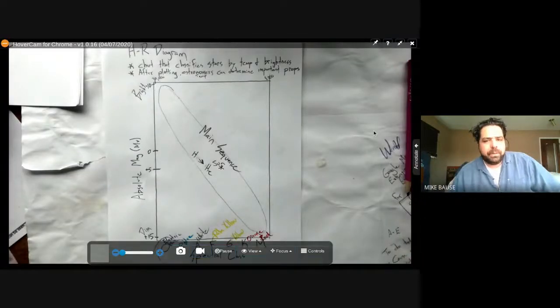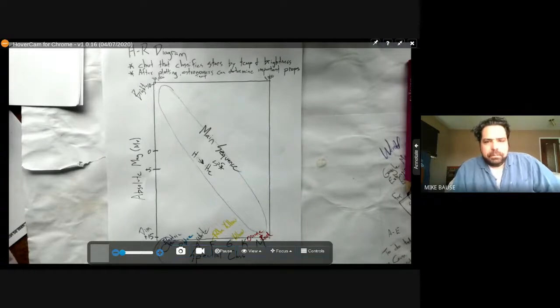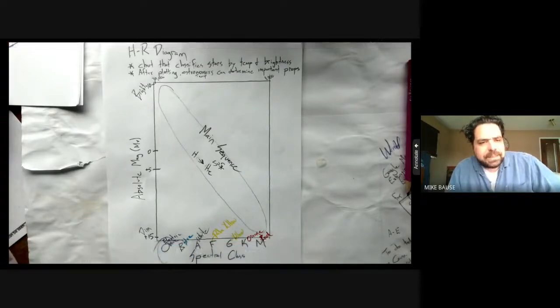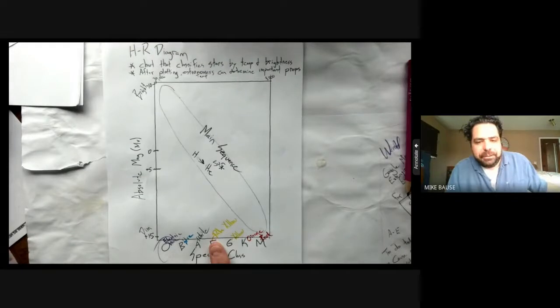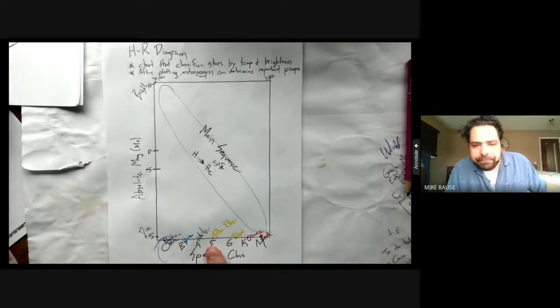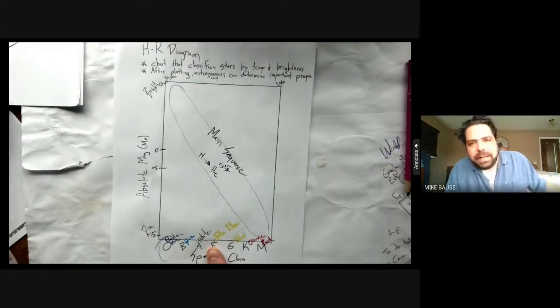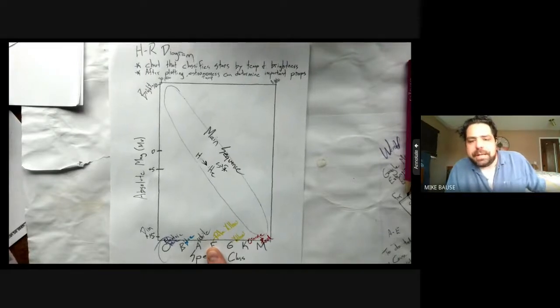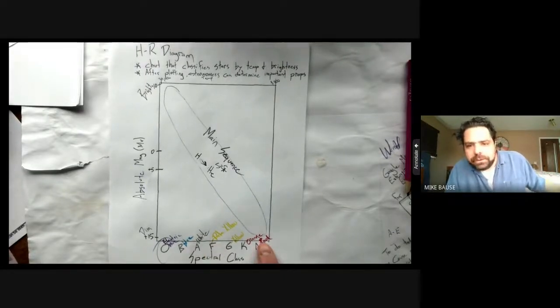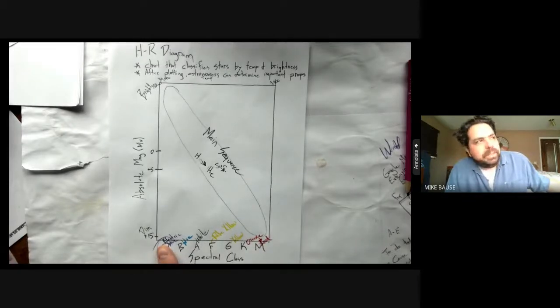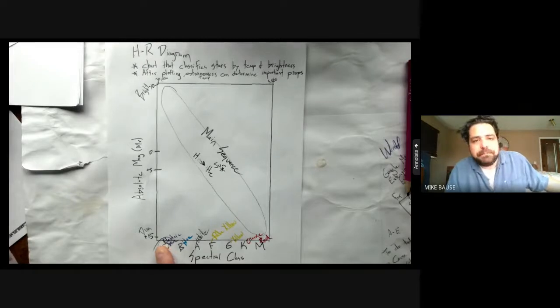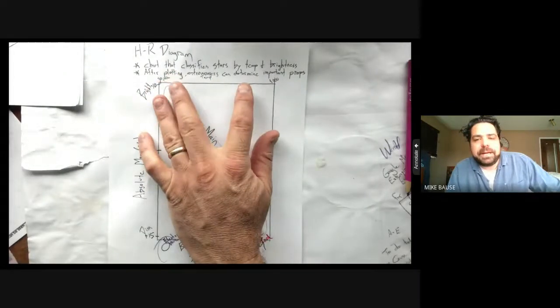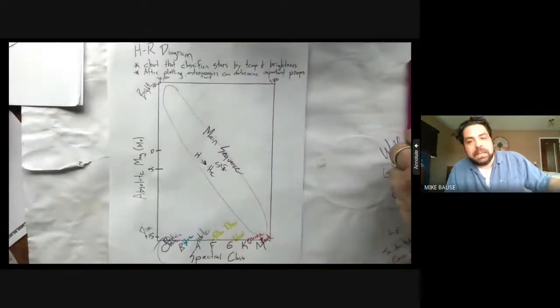We left off yesterday somewhere around here where we looked at the y-axis on the left, which is the brightness of the star, absolute magnitude, and then the two x-axes. Spectral class down here: O-B-A-F-G-K-M. These letters designate basically the color of a star in the sky, with M being red, the coldest stars, and O being the hottest stars, an electric blue kind of lightning colored star.